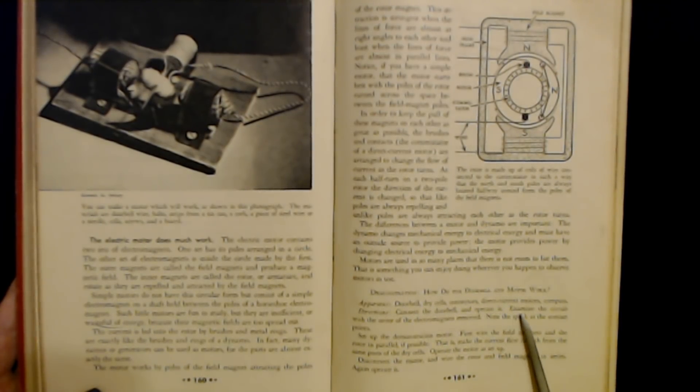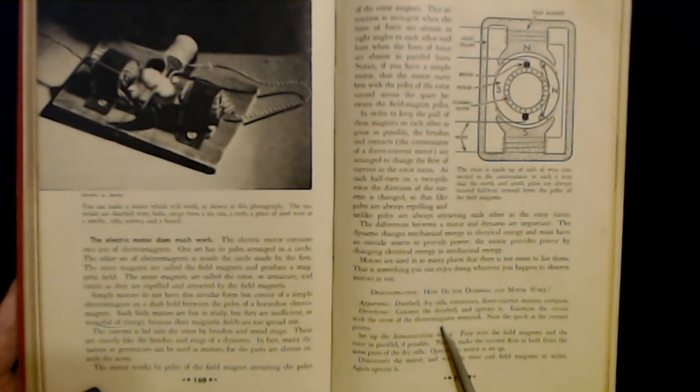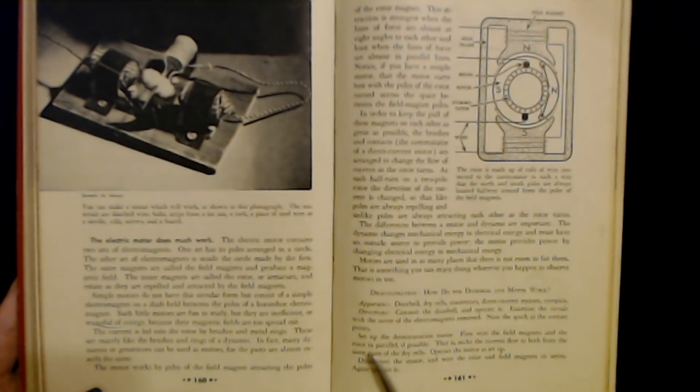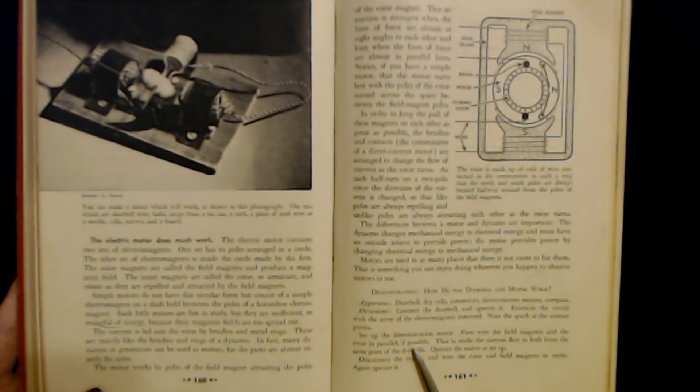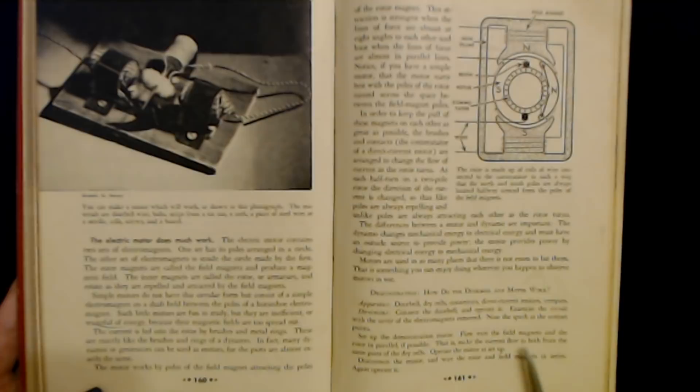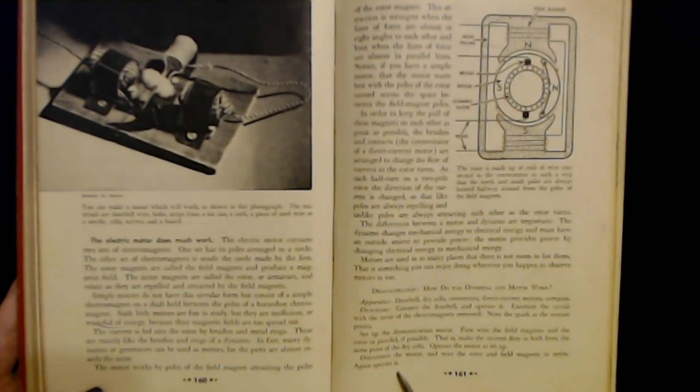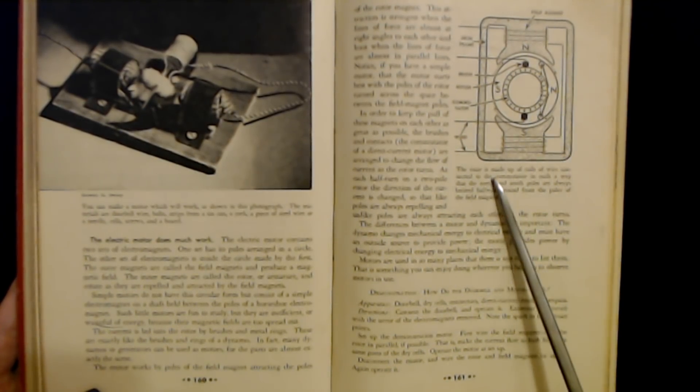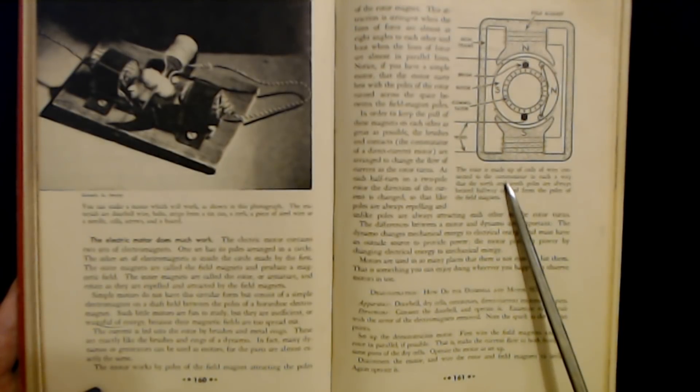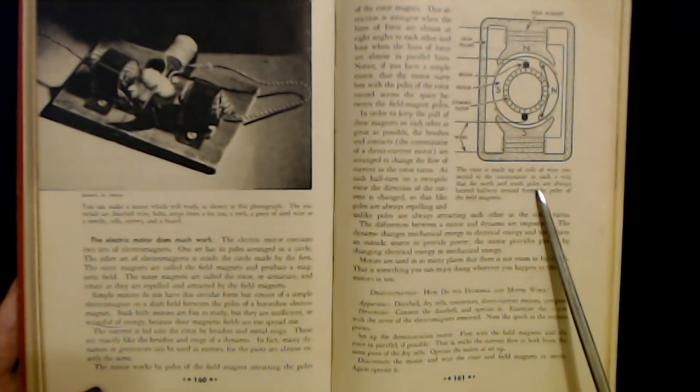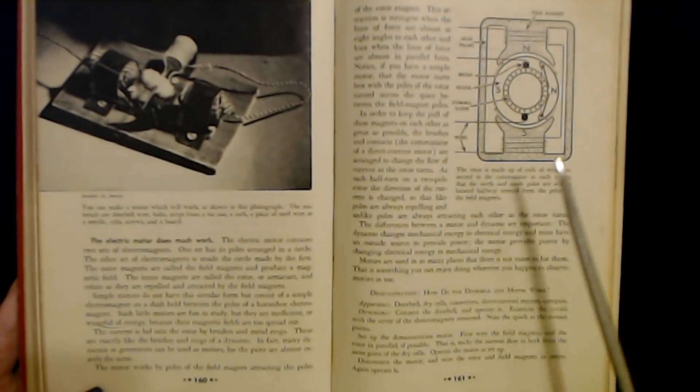Connect the doorbell and operate it. Examine the circuit with the cover of the electromagnets removed. Note the spark at the contact points. Set up the demonstration motor. First, wire the field magnets and the rotor in parallel if possible. That is, make the current flow to both from the same posts of the dry cells. Operate the motor as set up. Disconnect the motor and wire the rotor and field magnets in series and again operate it.